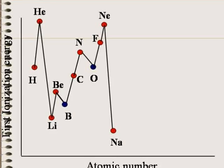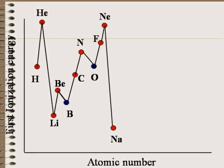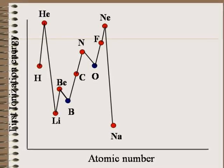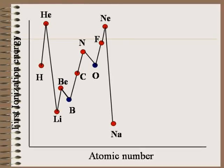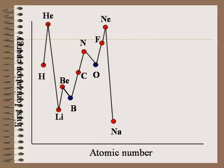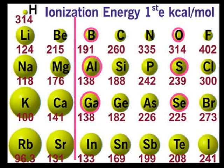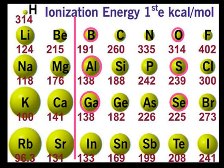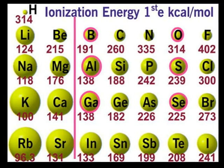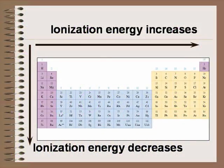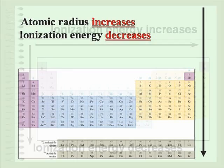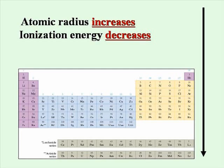There are some interesting exceptions to this trend in both boron and oxygen, which we will discuss later. You can see the decrease in ionization energy as atoms get larger and the increase in ionization energy as atoms get smaller, except for the few exceptions in boron and oxygen's groups. So the smaller the atom, the harder it is to remove an outer electron; the larger the atom, the easier it is to remove an outer electron. As atomic radius increases, it takes less energy to remove an outer electron.